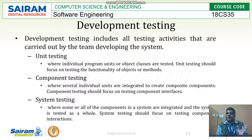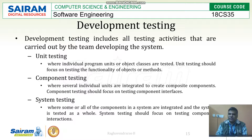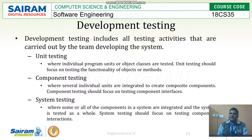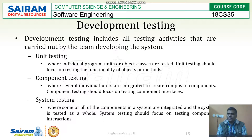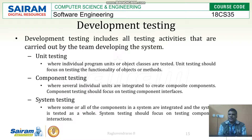The developer is going to test these things. In unit testing, individual units are going to be there — program steps — and those things are going to be tested. Objects, classes, and functionalities will be there. Those things are already tested in unit testing.